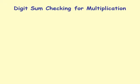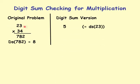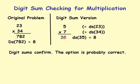Multiplication example: 23 times 34. One option is 782. Digit sum of 782 is 8. Digit sum version: digit sum of 23 is 5; digit sum of 34 is 7; 5 times 7 is 35, digit sum of 35 is 8. The digit sums match, so digit sum confirms the option 782 is probably correct.